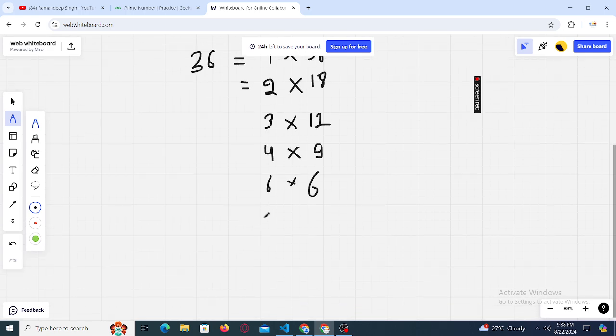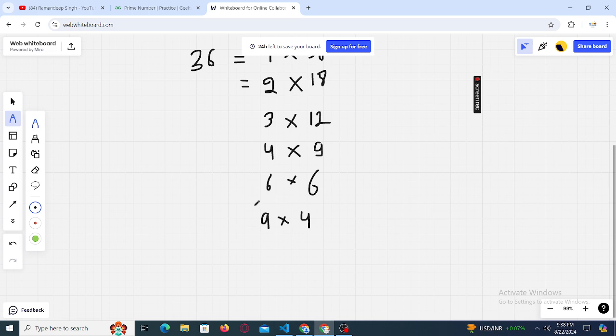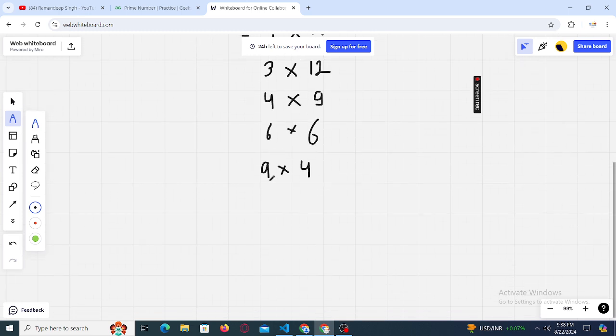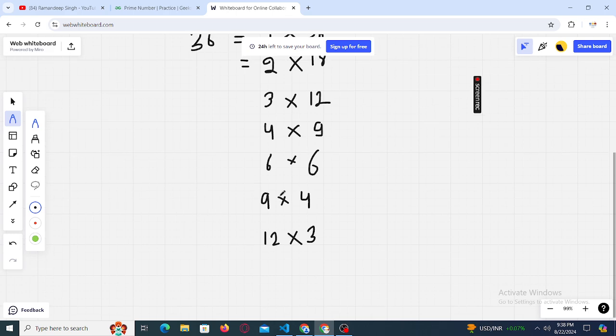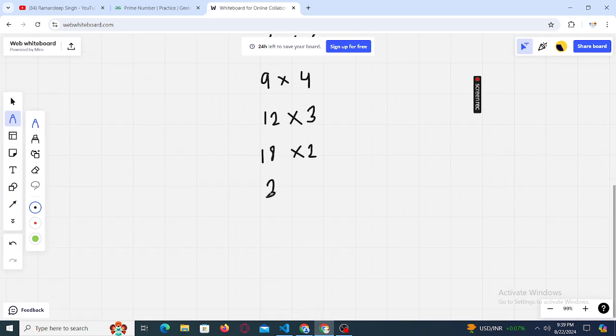So it can be written as 9 into 4. So basically we are iterating over every number, like going with the previous approach: start from 2, move to 3, 4, 5, 6, like that. And we have 9 into 4, we are actually writing down only those factors which actually divide this 36. So 6 divides 36, 9 divides 36, now 12 into 3, move to the next one that is 18 into 2, and then we have this 36 into 1.